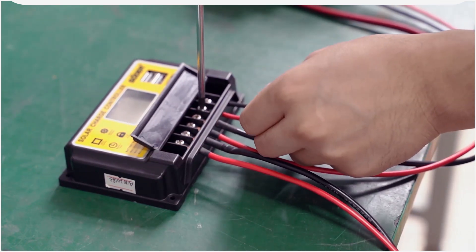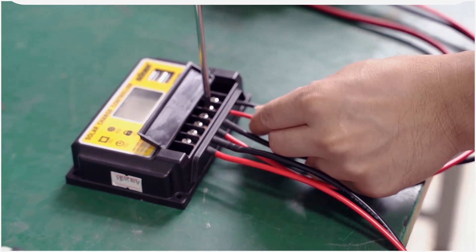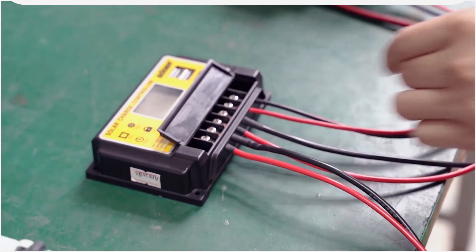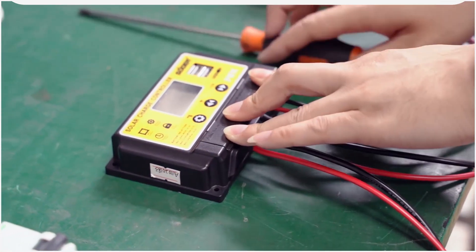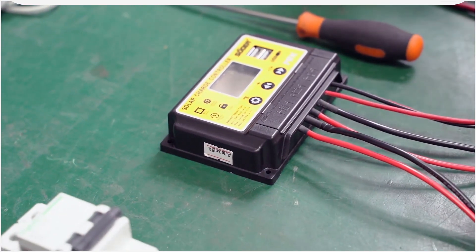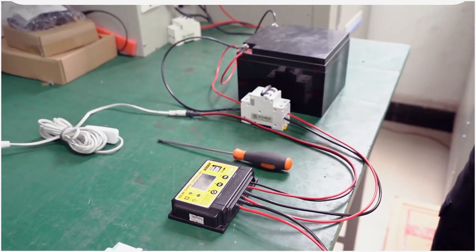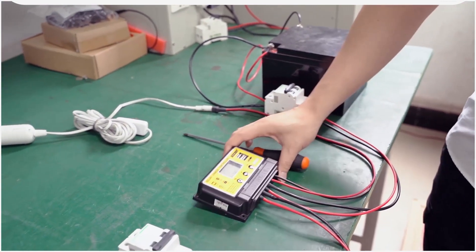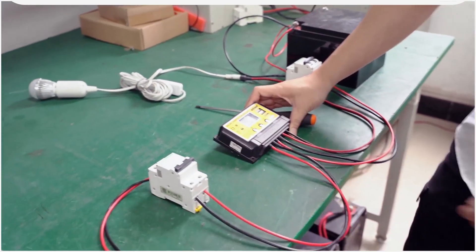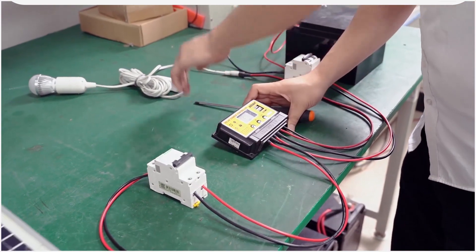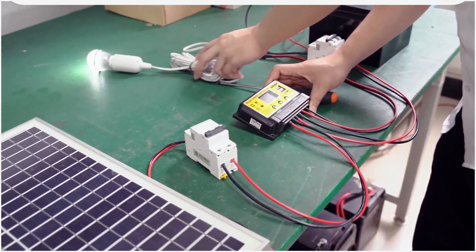Second, we will connect the solar panel. Select excellent performance and reliable solar panels. We can connect the solar panel in series or parallel. Make sure that the open circuit voltage and the total power range of the solar panel is within the solar controller's available range.